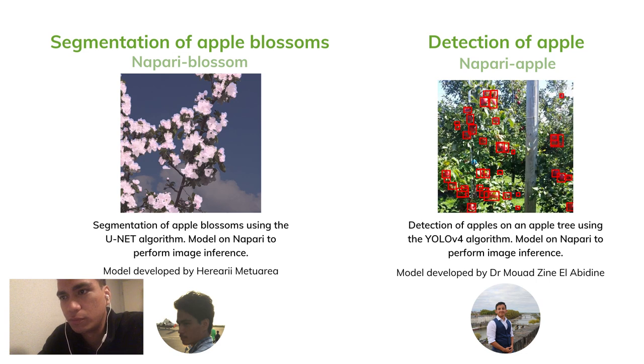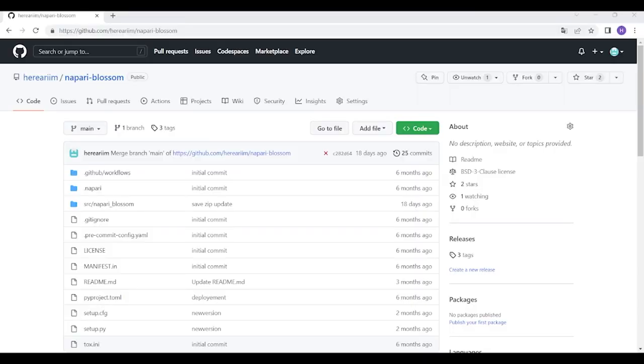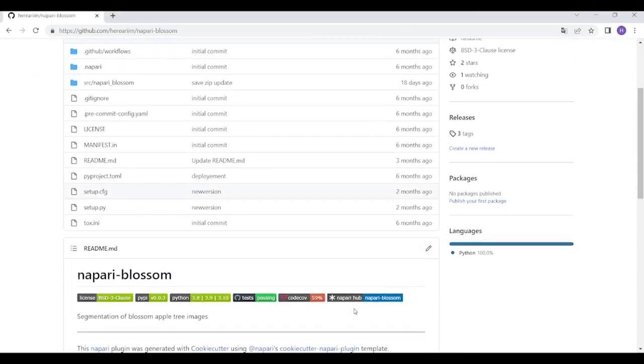The plugin for the segmentation of Apple Blossom is called Napari Blossom. The plugin for Apple detection is called Napari Apple. It is necessary to have Darknet installed on your PC and ready to use. Their source code is publicly available on GitHub, and on Napari, they are accessible on the built-in hub.